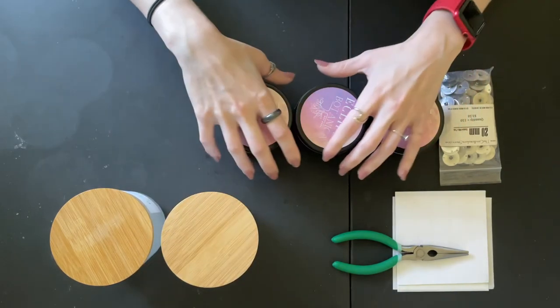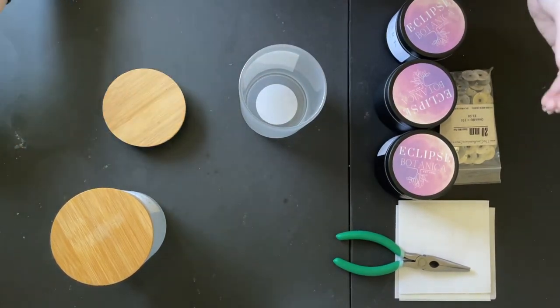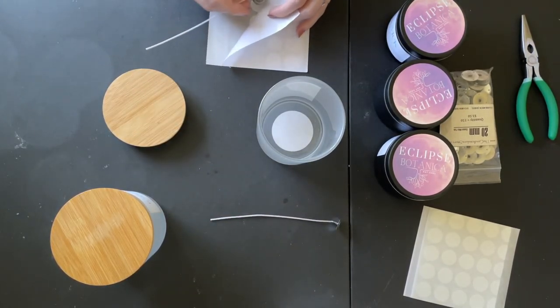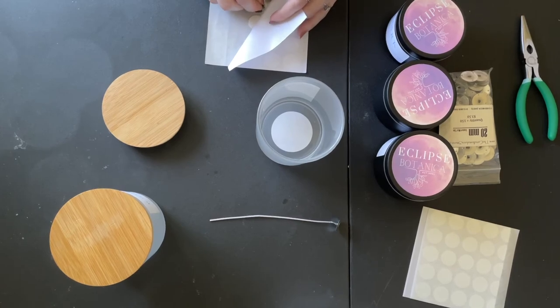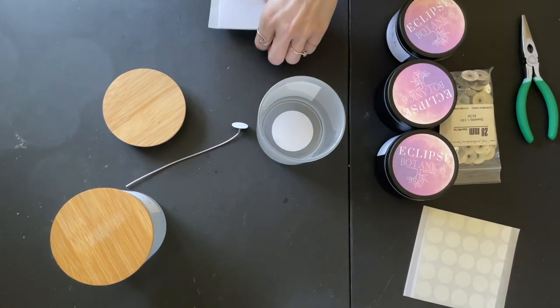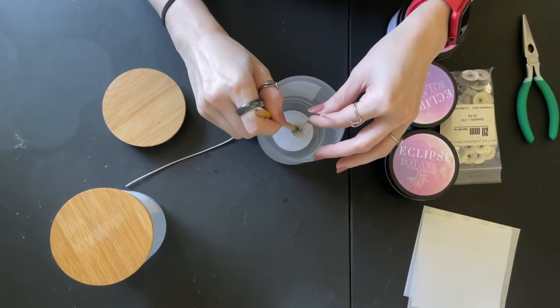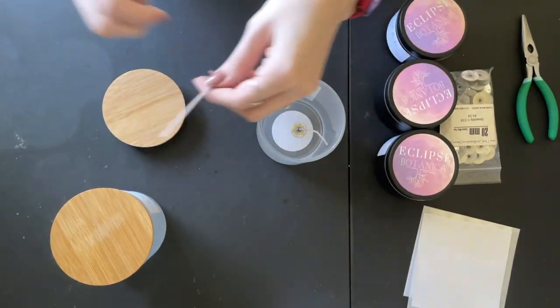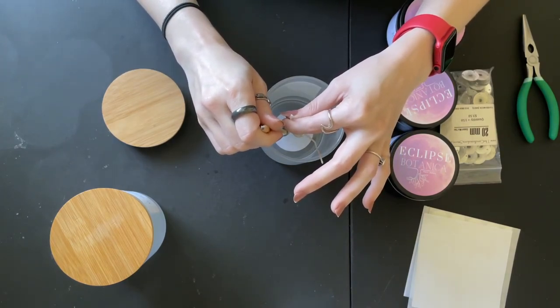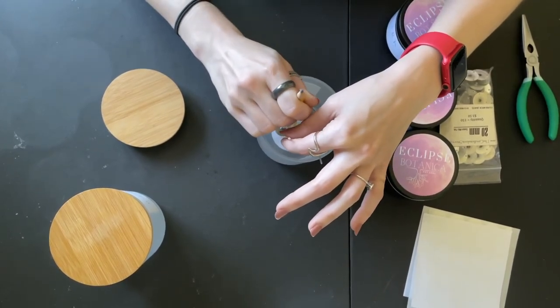So first, let's start off with this guy. We're going to grab two wicks, and just put these on like normal. I just kind of eyeball where to put it in, and then press it down with the eraser of a pencil. Probably not the most effective way to do it, but it works for me.